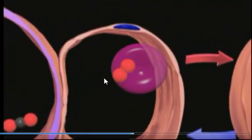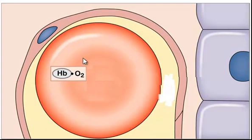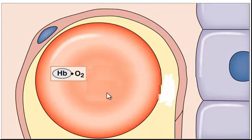Once the red blood cell gets to the peripheral tissue, it has hemoglobin bound to oxygen. Each red blood cell has approximately 270 million hemoglobin molecules, and each hemoglobin carries four oxygen molecules. There are about 20 to 30 trillion red blood cells in the human body, and their job is to deliver oxygen and collect carbon dioxide to over 37 trillion cells that a typical human body may have.